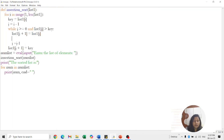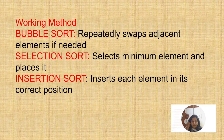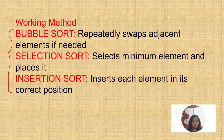This is also your lab program — just go through it. If you have any question, please post it in the description box. The last topic for this chapter is time complexity. Before that, let me quickly revise the working method of bubble sort, selection sort, and insertion sort. Bubble sort repeatedly swaps adjacent elements if needed. Selection sort selects the minimum element and places it accordingly. Insertion sort inserts each element in its correct position. These are the three working methods of sorting techniques.